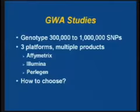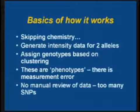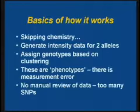I can't possibly cover everything you ought to think about in choosing a platform in 20 minutes, so I'm going to talk a little bit about the basics of calling genotypes, examples of good and bad data, and a few things to consider. Basically, I'm going to skip the chemistry. All of the products are generating intensity data for the two alleles, and then assigning the genotypes based on the clustering of those two allele intensities into three clusters for the three expected genotypes. One thing to remember is these are phenotypes — there is measurement error.